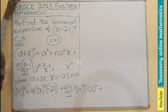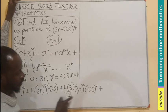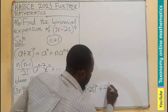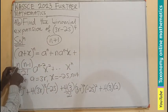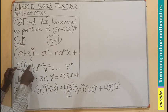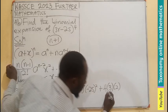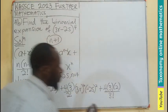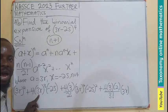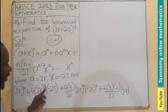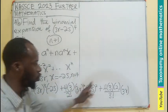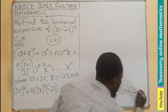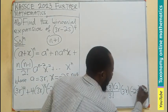Don't forget we are looking for 5 terms. For the fourth term: the coefficient is 4 times 3 times 2, divided by 3 factorial. A is 3R exponent 1, and X which is negative 2S becomes exponent 3. Then for the fifth term, the coefficient is 4 times 3 times 2 times 1 divided by 4 factorial. A is 3R exponent 0, and negative 2S has exponent 4.